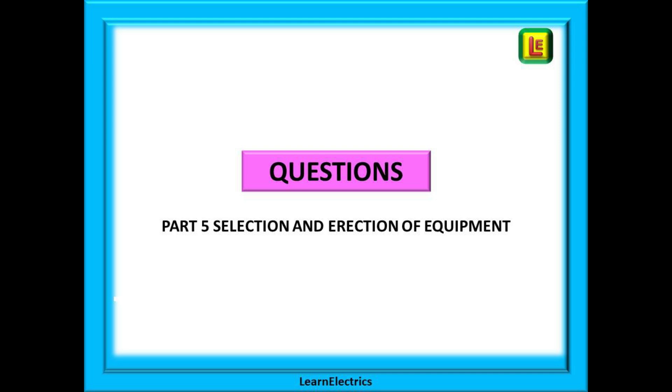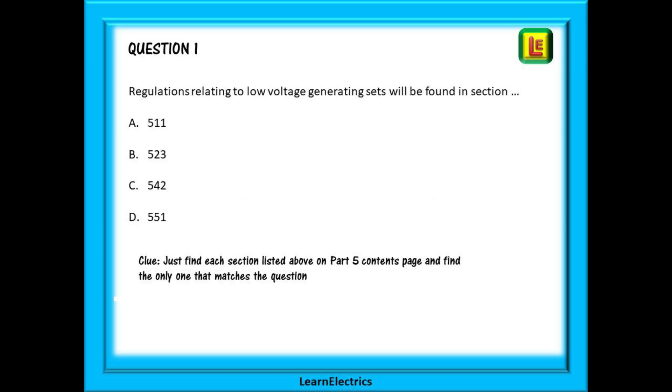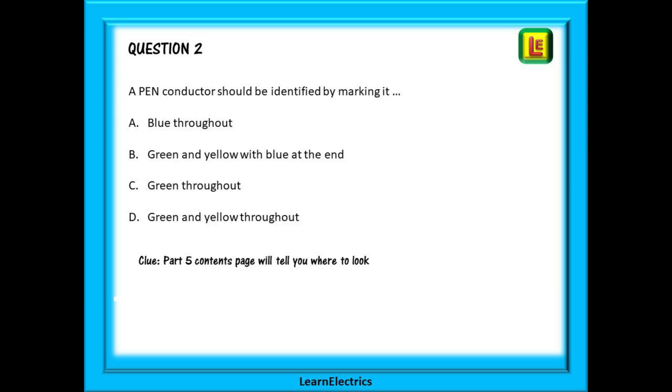Now on to this week's questions on Part 5. Question 1 is a process of elimination. Just find each section listed above on the Part 5 contents page and find the only one that matches the question.